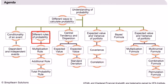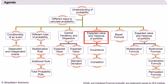After learning the conditionality of probability, we will cover types of events — that is, independent and dependent events. Next, we will learn how to calculate the expected value and dispersion or variance of the possible outcomes. Calculation of dispersion is important because it is a measure of risk.